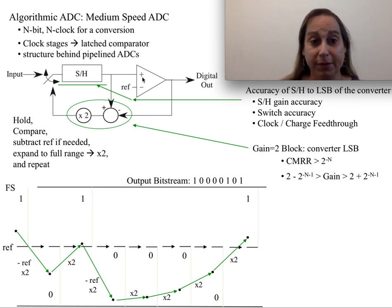If it was multi-bit, you could imagine this being a two-bit ADC. I'd have one of four references to subtract, one of three references—if it's zero there's nothing there—and then expand it up by four. You can imagine how this extends.